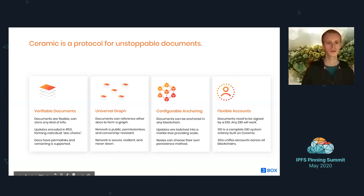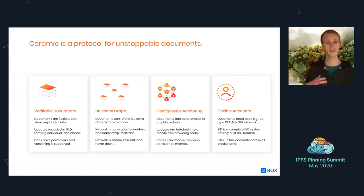Ceramic is a protocol for unstoppable documents. So what does that really mean? Well, it's documents that are owned by someone, and in order to make updates to them, you have to sign them. So there are mutable documents that are signed by some identity, and they're also anchored on-chain, so we get a stronger form of immutability.